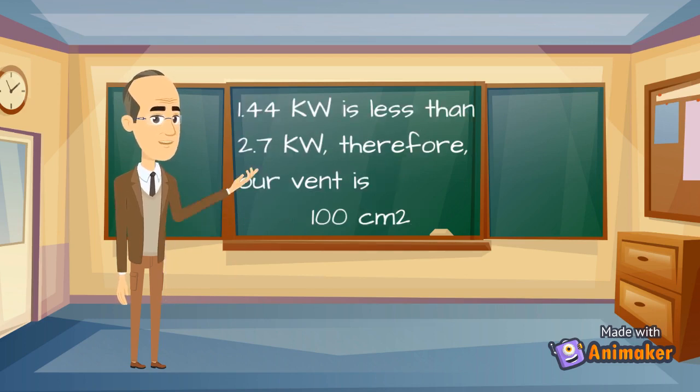Our appliance is 1.44 kilowatts net. This is less than 2.7 kilowatts net, which is the maximum allowed before adding further ventilation. So we only need 100 centimeters squared of permanent ventilation.